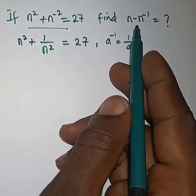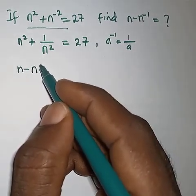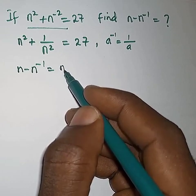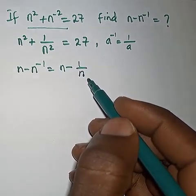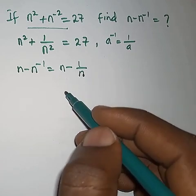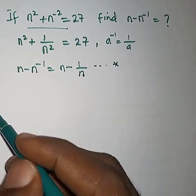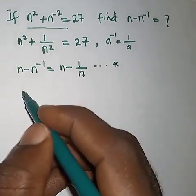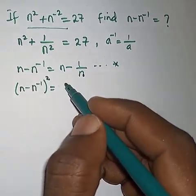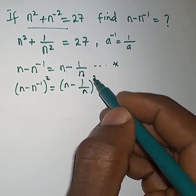So now let's come to this. We need to find n minus n to the power minus 1, and also this can be written as n minus 1 over n, from the law of indices. So now let's try to square this. If I square this, I'm going to be having n minus n to the power minus 1, all squared, which is the same thing as n minus 1 over n, all squared.